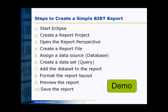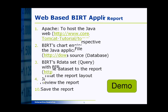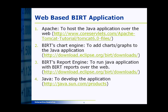Now if you want to develop a web-based application using the BIRT reporting tool, you do need to download Apache to act as a web server. If you want to add charts to your report, download the BIRT chart engine — that's also available on the Eclipse website. And you will need the BIRT report engine in order to display the BIRT report on the web, which you can also find on the Eclipse website.